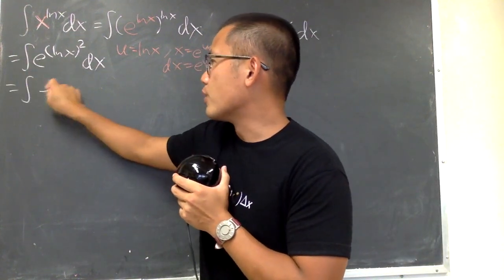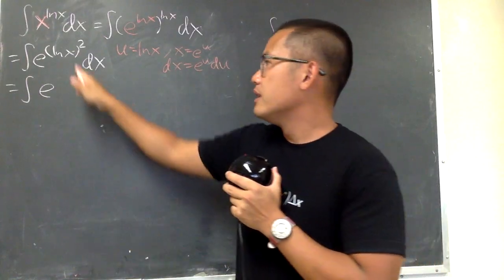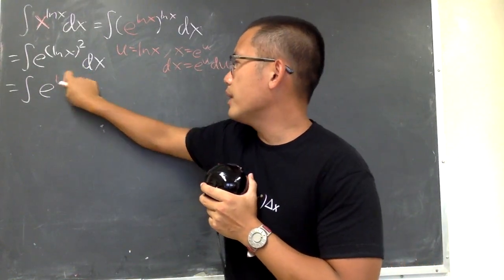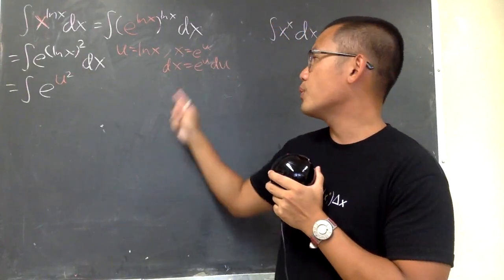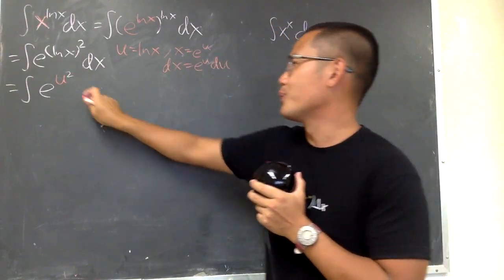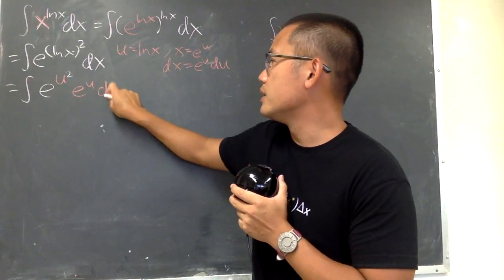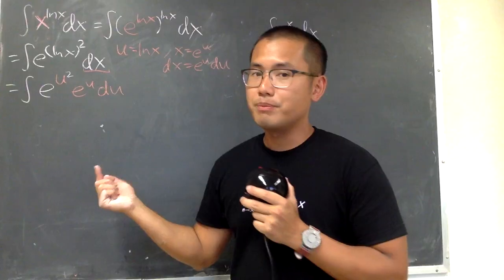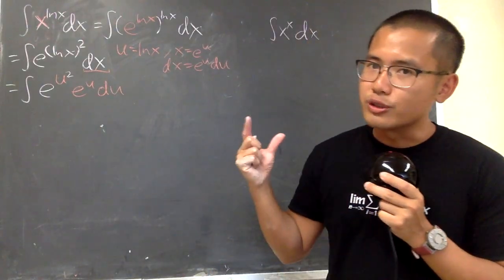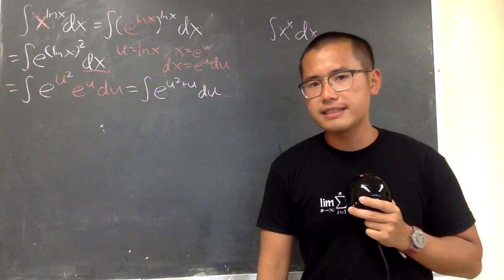We see that here we have the integral of e, and this right here is the u to the second power. And then dx is just this right here, which is e to the u du. This and that are pretty good because they are both of base e. So of course we can just add the exponents. Very nice.